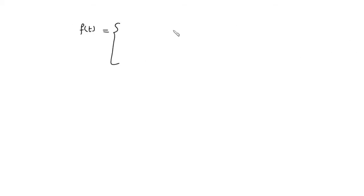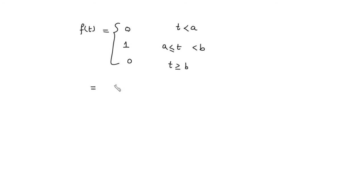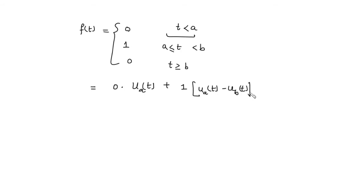Similarly, if we have a function defined over some interval where before 'a' the value is 0, between 'a' and 'b' the value is 1, and after 'b' the value is 0 again, we can express this as: 0·u(t-a) + 1·[u(t-a) - u(t-b)] + 0·u(t-b).